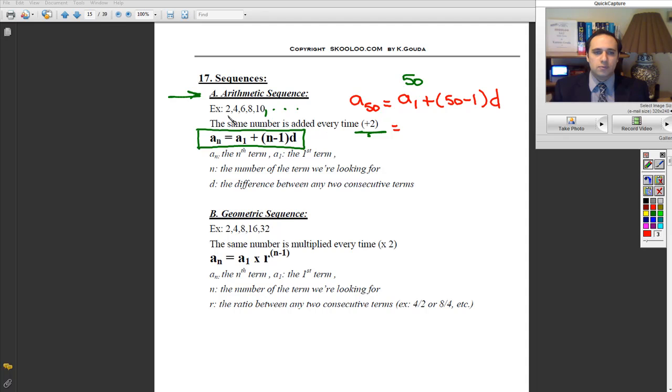Now, a1 is the first term, which is 2, so it's going to equal 2 plus 49 times d. And d is the difference between any two consecutive terms, so it is 2. So 49 times 2, this will give you the answer for the 50th term of this sequence.